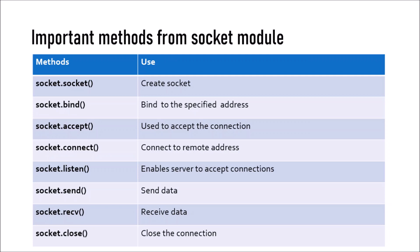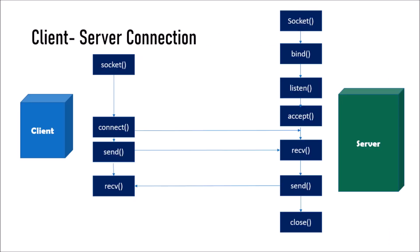From the socket module we use several methods. The socket.socket method is used to create the socket. socket.bind is used to bind a specific address and port number with the socket. socket.accept is used to accept the connection. socket.connect connects to a remote address — if you want to connect from client to server, you use socket.connect. socket.listen enables the server to accept connections. socket.send is used for sending data and socket.receive for receiving data. Finally, socket.close closes the socket. Most of these methods are used at the server side; fewer are used at the client side.